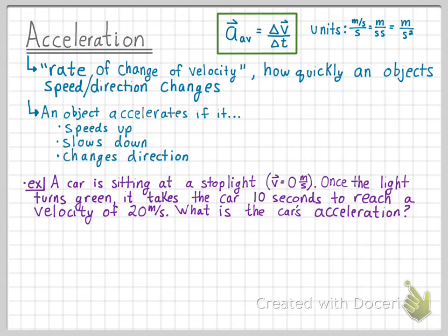We know that our acceleration equation is the change in velocity over change in time, and we can expand this equation because the delta symbol means final minus initial. We can now start filling in our known variables. The final velocity was twenty meters per second, and since we started at rest, our initial velocity was zero meters per second, and this acceleration took place over ten seconds.